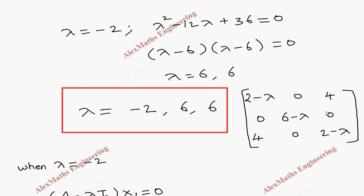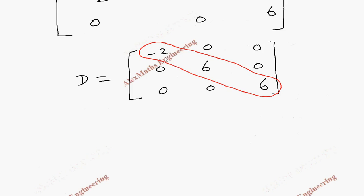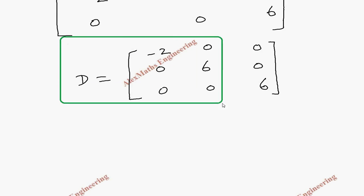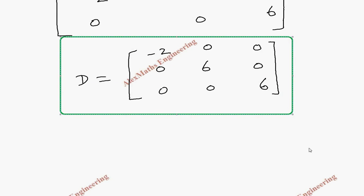The diagonal matrix D has leading diagonal elements minus 2, 6, 6 — exactly the eigenvalues we computed earlier. The diagonalization of the given matrix by orthogonal transformation is now complete.